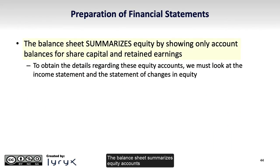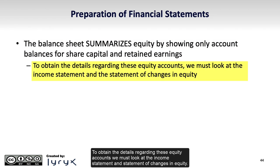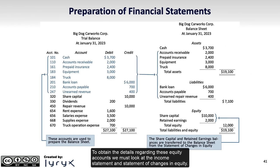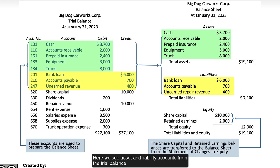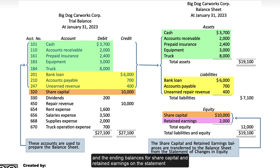The balances for share capital and retained earnings that appear on the statement of changes in equity are transferred to the equity section of the balance sheet. The balance sheet summarizes equity accounts by showing only account balances for share capital and retained earnings. To obtain the details regarding these equity accounts, we must look at the income statement and statement of changes in equity. Here we see asset and liability accounts from the trial balance, and the ending balances for share capital and retained earnings on the statement of changes in equity are used to prepare the balance sheet.